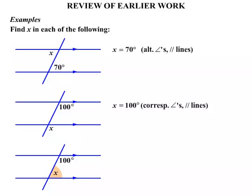Now the x and the 100 degrees, well this time they're not equal. They add up to 180 degrees, so x has to be 80 degrees. And the reason is cointerior angles add to 180 degrees. Again, we must have parallel lines for these results to take effect.